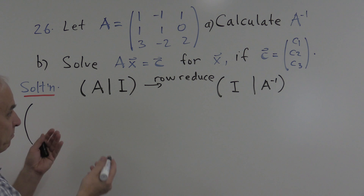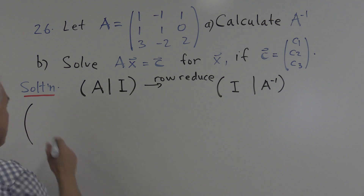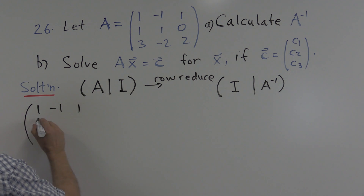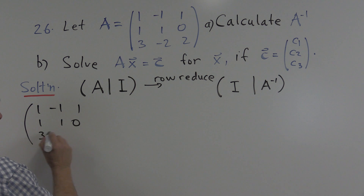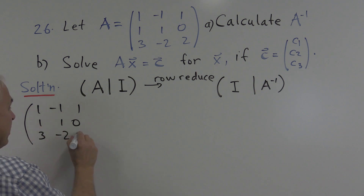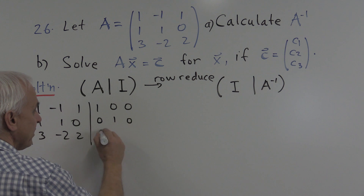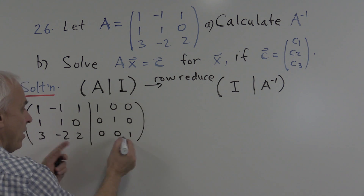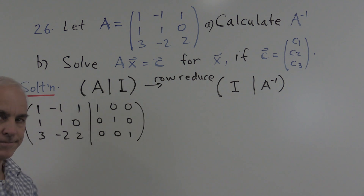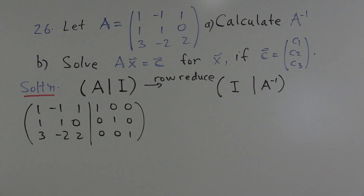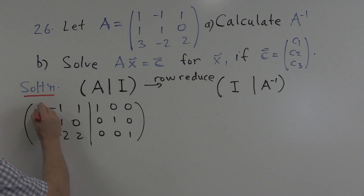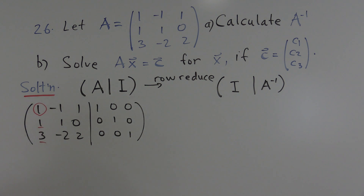It's a row reduction with a big augmented matrix. We have our original matrix A on the left and the identity matrix of the same size on the right. And what we're going to do is use this entry here as a pivot entry to eliminate the entries below it.